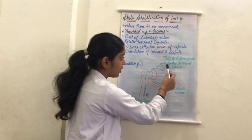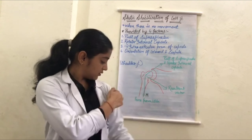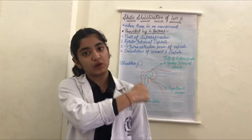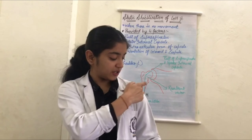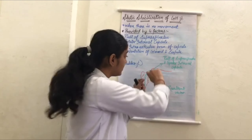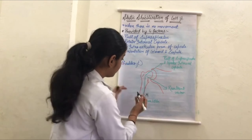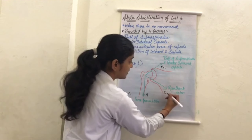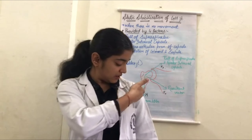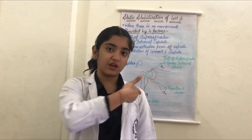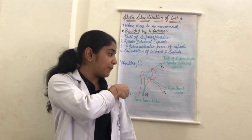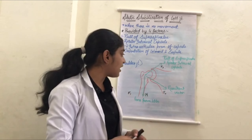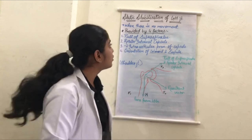The supraspinatus and rotator interval capsule provide an equal and opposite pull to counter gravity. We can represent this as vectors: F1 is one force, F2 is another, and the resultant force F0 is directed toward the medial side of the body — toward the glenoid center. This resultant force keeps the shoulder joint from displacing inward. Without it, dislocation or subluxation would occur. That summarizes the static stabilization biophysics.